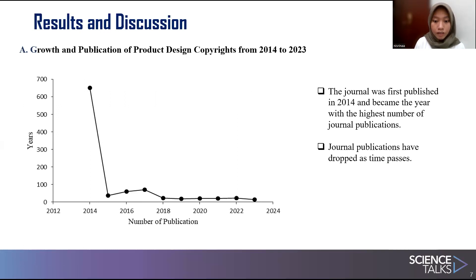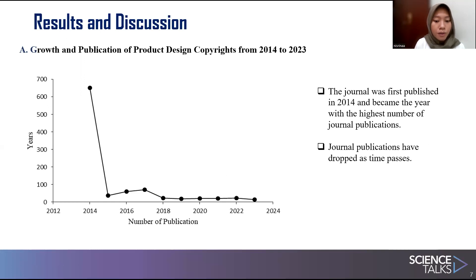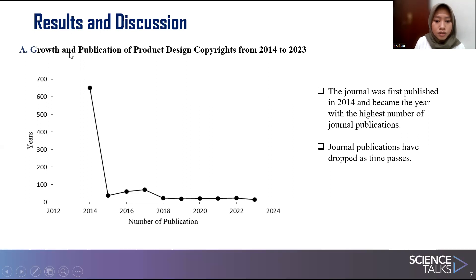From 2015 onwards, the number of publications decreased to no more than 100 per year, decreasing by about 2 to 5 publications annually. If you look at the data over the last 10 years, it will continue to fall after 2024 as years pass.